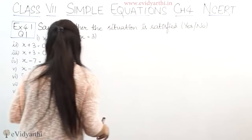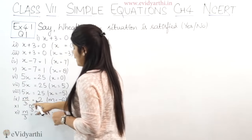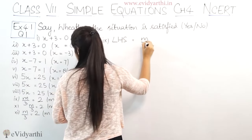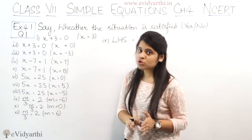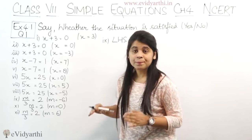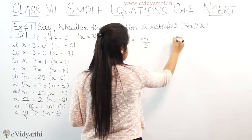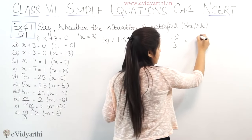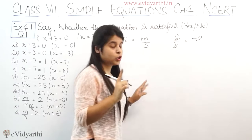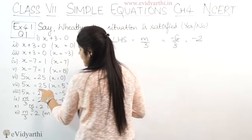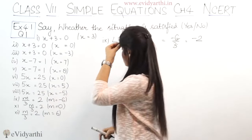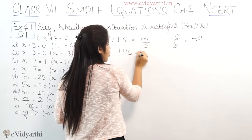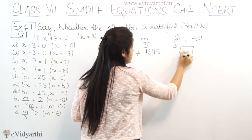In the 9th part we have m upon 3 equals to 2. Left hand side is m upon 3. M value given is minus 6. So substituting: minus 6 upon 3. The 6 and 3 cancel, giving minus 2. RHS is 2, but LHS is minus 2. LHS is not equal to RHS, so the answer is no.